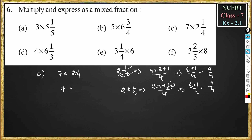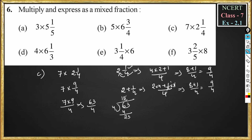So 7 into 2¹/₄ becomes 7 into 9/4. This equals 7 × 9 / 4, which is 63/4. Dividing 63 by 4: 4 ones are 4, bring down 23; 4 fives are 20, remainder is 3. So the answer is 15³/₄ — whole number 15, remainder 3 in the numerator, and divisor 4 in the denominator.